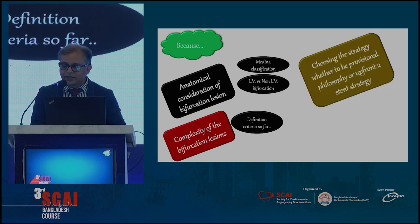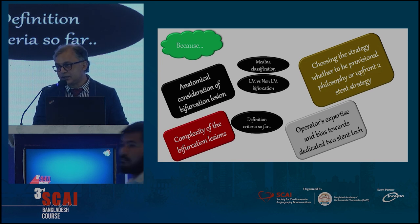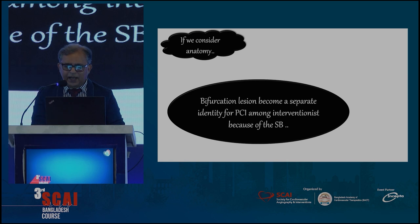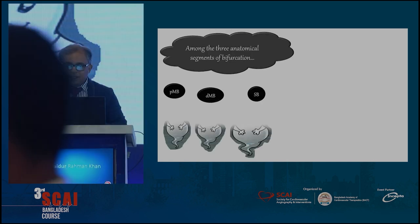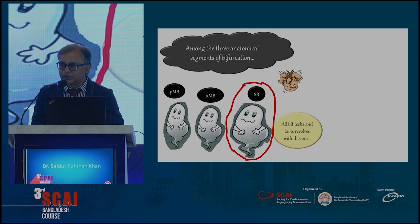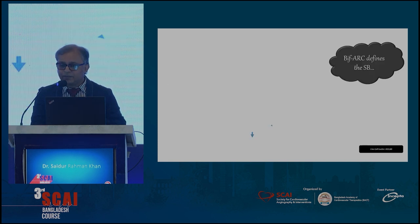When choosing strategy — whether to use provisional or upfront two-stent strategy — the operator's expertise and bias towards a dedicated two-stent strategy are all factors where bifurcation lesions become not equal. If you consider the anatomy, the most important among the three components is the side branch, which is the main determinant in defining the bifurcation and its relevance — how to treat it and how to approach it.